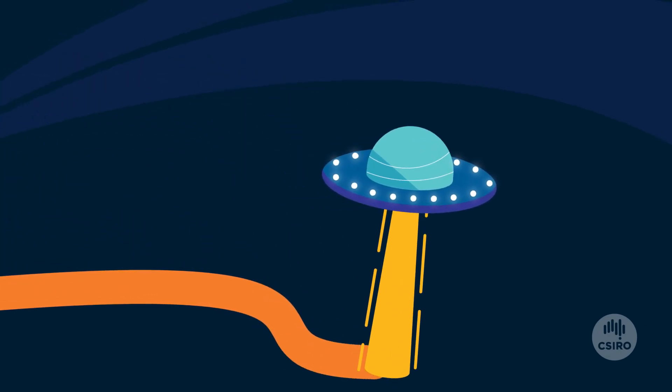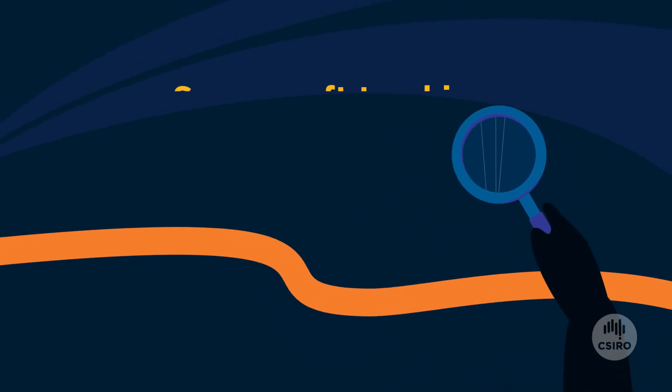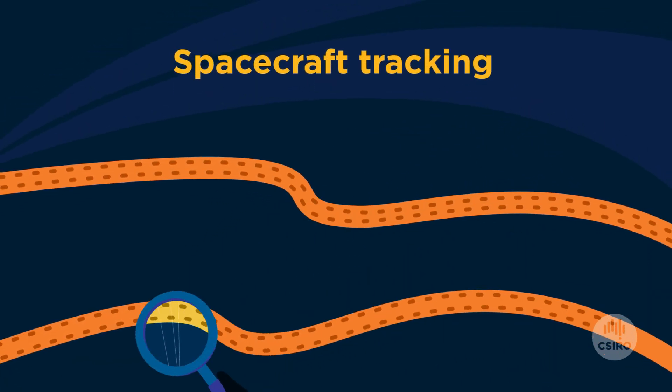When we say we're tracking a spacecraft, that doesn't mean we're following it down the street to the shops. So what does it mean? Tracking can involve several things.